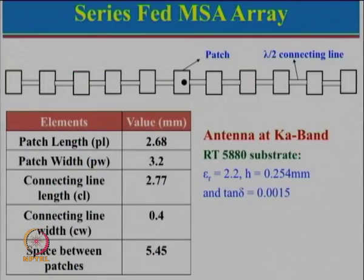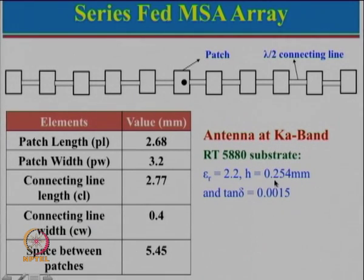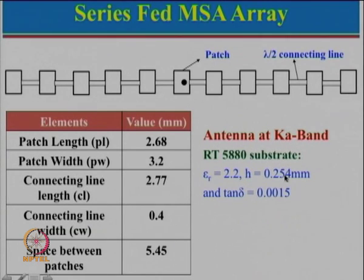Millimeter wave has some good applications — small size, very fast data rates. Now let us see what we actually realized. We designed the antenna at Ka-band. The substrate thickness is very small, just 0.254 mm — a very thin substrate that can bend if not handled carefully. This small thickness is required because h should be less than 0.06λ, and at Ka-band λ is very small, so 0.06λ is also very small.